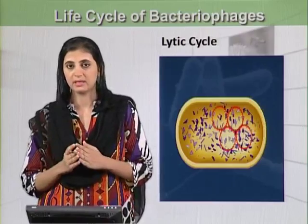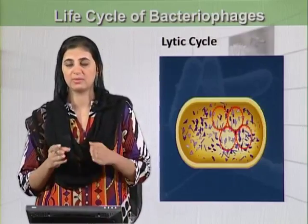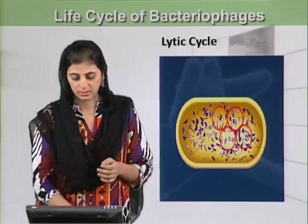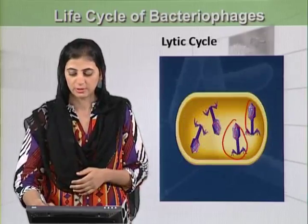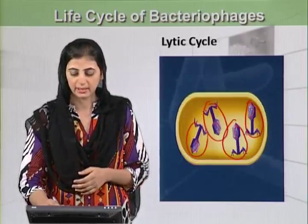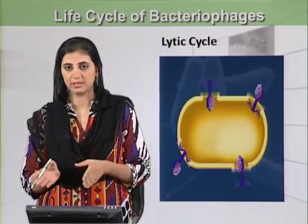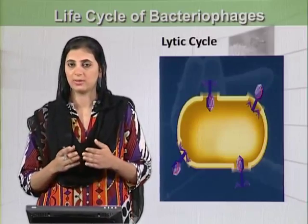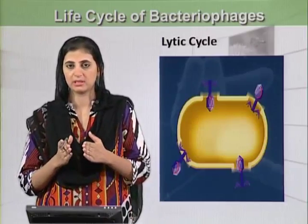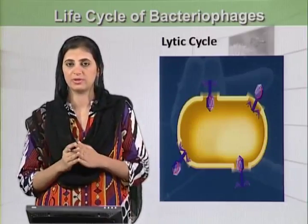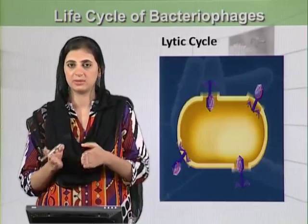In the next step, other important components for bacteriophage assembly are produced. Then we can see the whole bacteriophages multiplied. They cause lysis or the breakdown of the bacterial cell, and the bacterial cell is ruptured. From one bacteriophage, many bacteriophages are produced, and these are now ready to infect other bacterial cells.